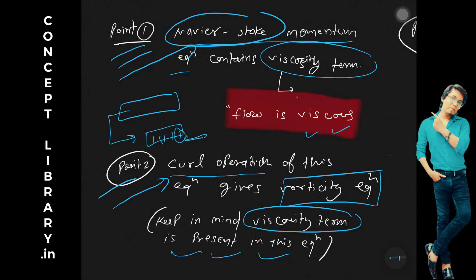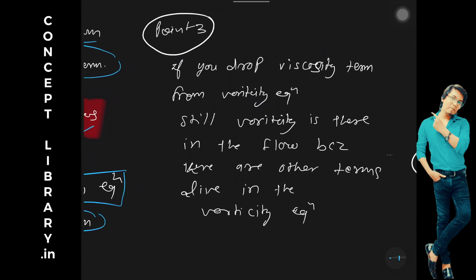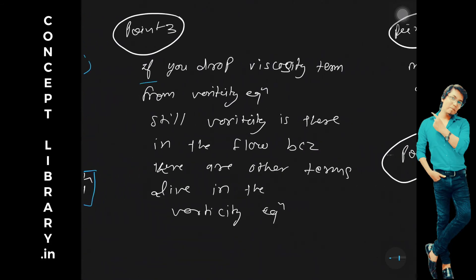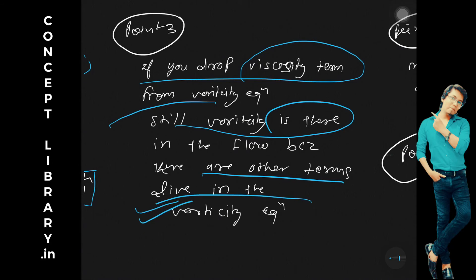Point three: if you drop viscosity term, I mean make that viscosity term as zero from the vorticity equation, still vorticity is there, correct? Because there are other terms, they are alive in the equation. So we have vorticity equation. It's not like we lost our vorticity term itself.